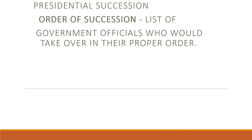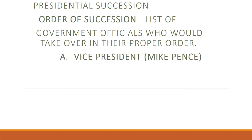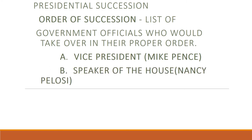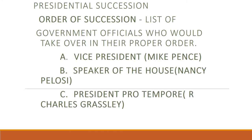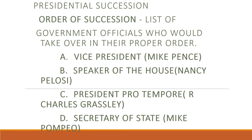The order of succession: if the president were to pass away, who takes over? There is a giant list — we don't have to memorize all of it. Number one in line is Mike Pence. Number two is the Speaker of the House, currently Nancy Pelosi. Then is the President pro tempore, which is basically the longest-serving senator. After that is Secretary of State Mike Pompeo. So it starts in the executive branch, then goes to the House, then the Senate, then back to the executive branch.